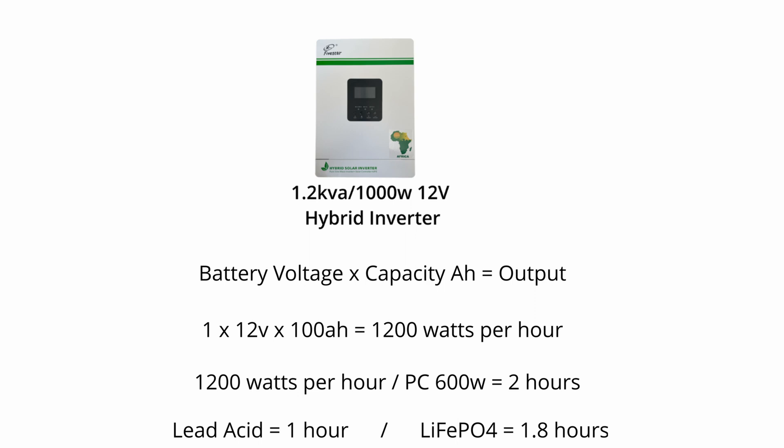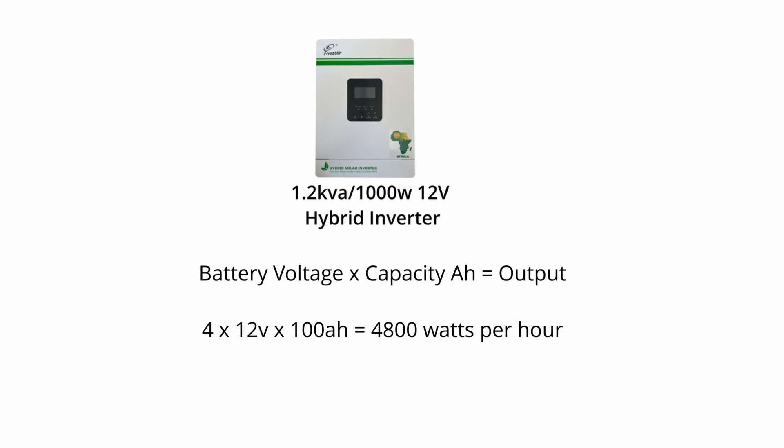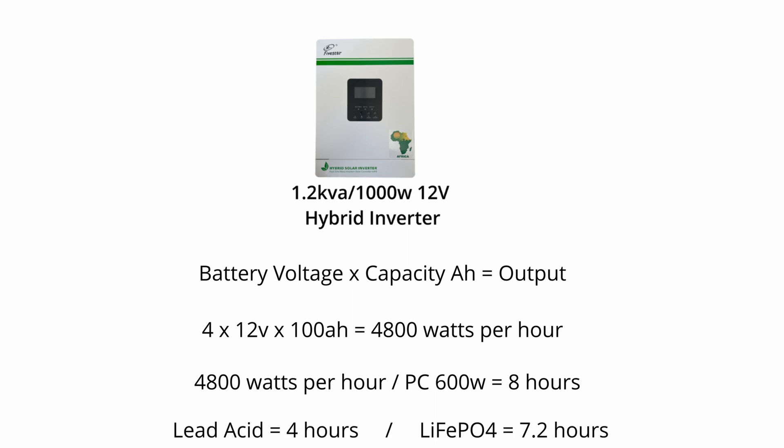If you were running four 12 volt 100 amp hour batteries, that would equal 4800 watt hours. Running a 600 watt PC, you'd divide 600 watts by 4800 watt hours, giving you eight hours total runtime. If running on lead acid batteries, it's recommended to run only four hours, whereas with lithium-ion batteries you'd have a runtime of seven hours.